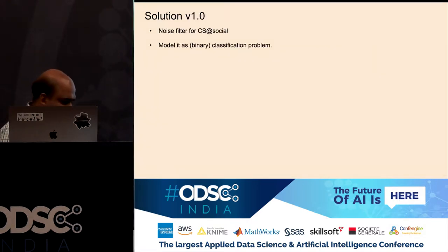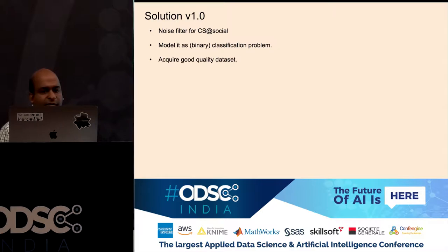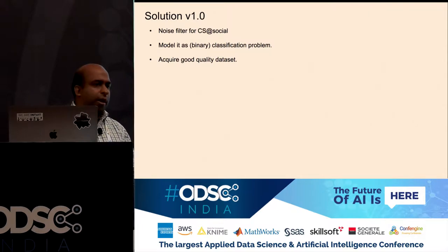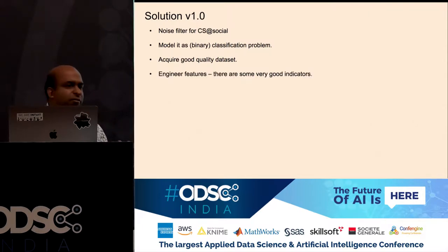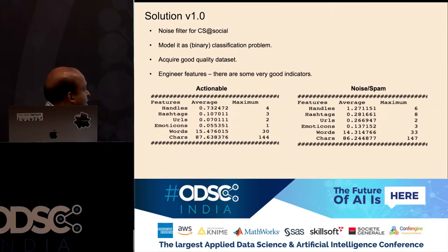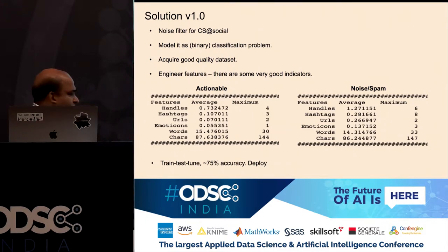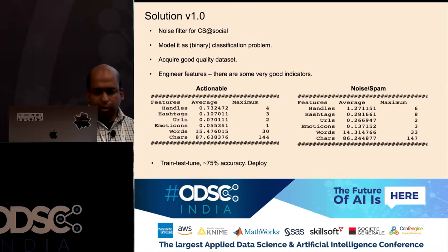This is a classical spam filter setting. You take your data and model it as binary classification: segregate noise from actionable. The typical steps are: acquire a dataset, find useful features. In this case, along with text, features like handles, hashtags, URLs, and emoticons showed a remarkable difference between noisy and actionable data. We built a model on top of these features, deployed it, and got decent numbers to begin with.